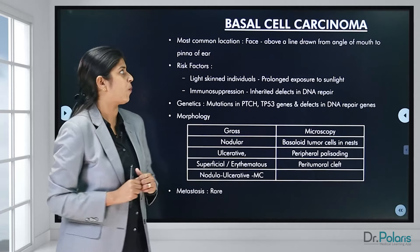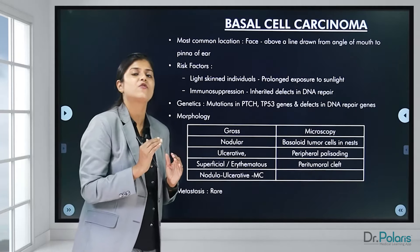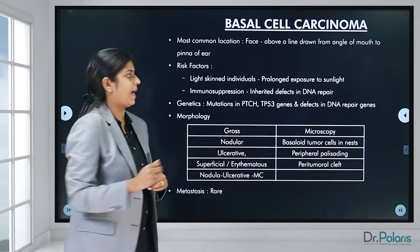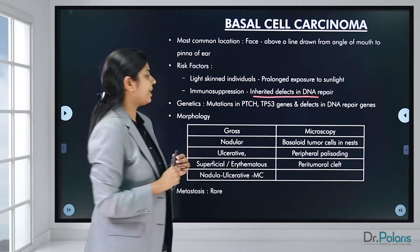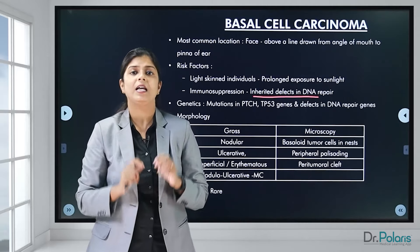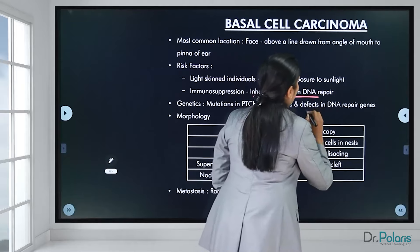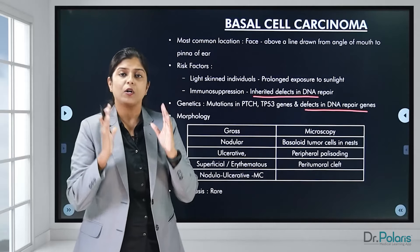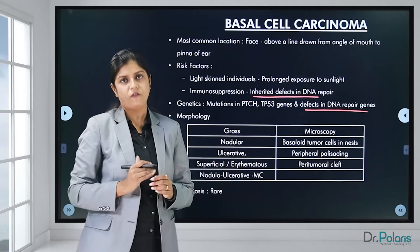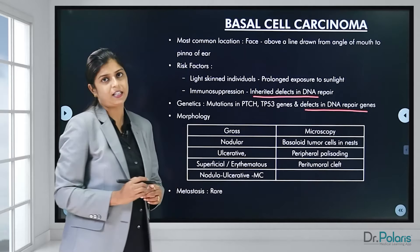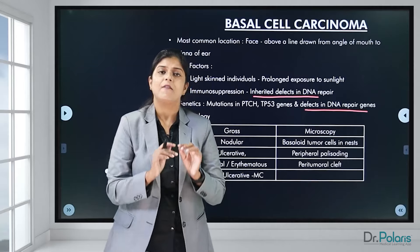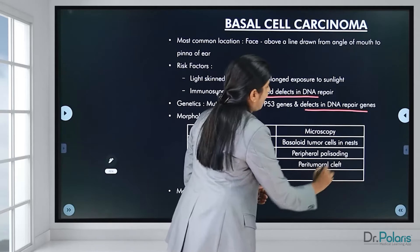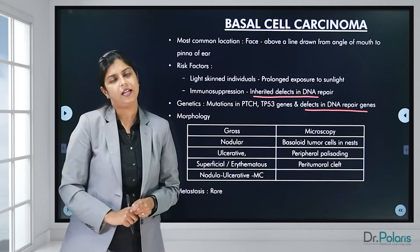To summarize basal cell carcinomas: the most common location is the face above the line from the angle of the mouth to the pinna. Risk factors include light-skinned individuals, immunosuppression, prolonged sun exposure, and defects in DNA repair. The most important genetic factors are mutation in the PTCH gene and P53 genes, plus defects in DNA repair genes. Grossly, it can be nodular, ulcerative, or nodulo-ulcerative — the most common type. Microscopically, the characteristic features are peripheral palisading and peritumoral clefting. Metastasis is very rare.